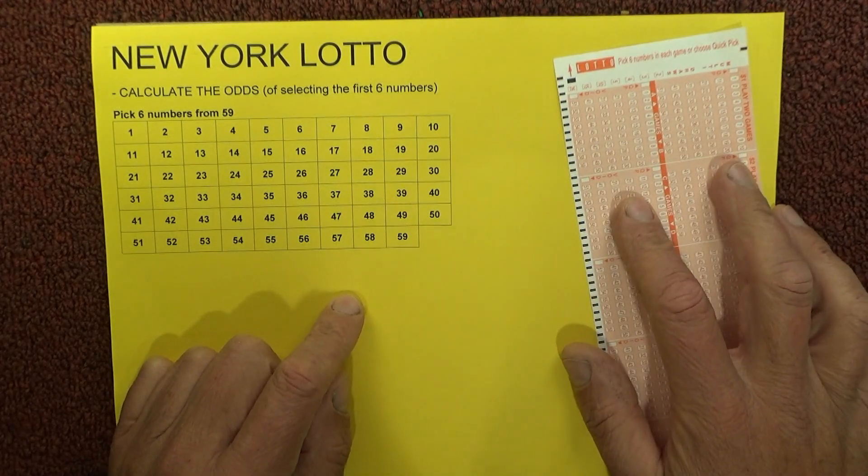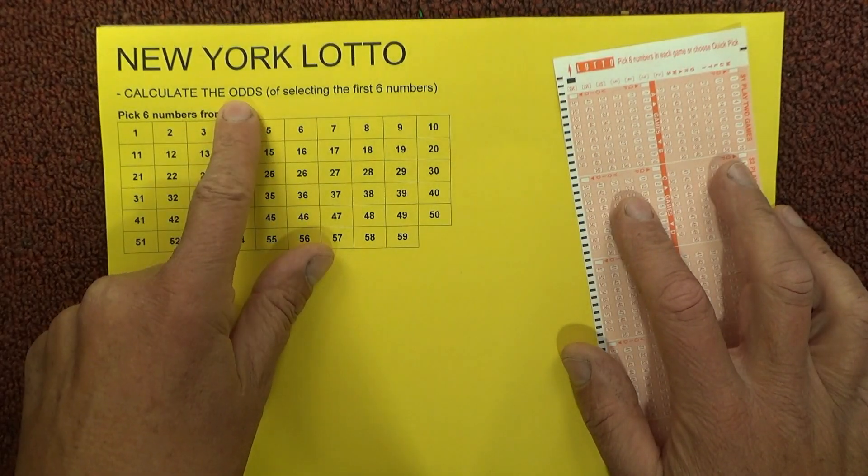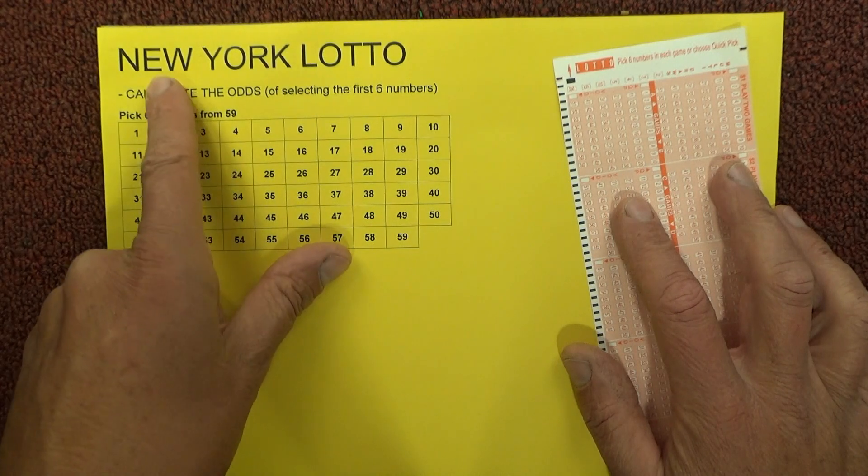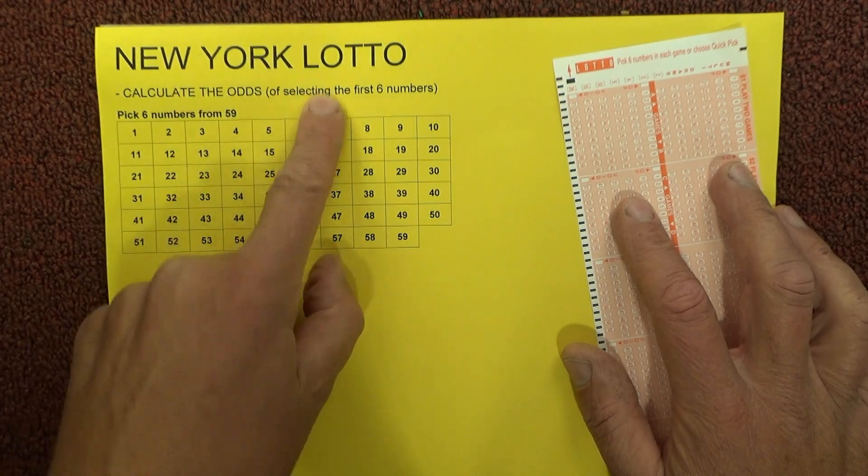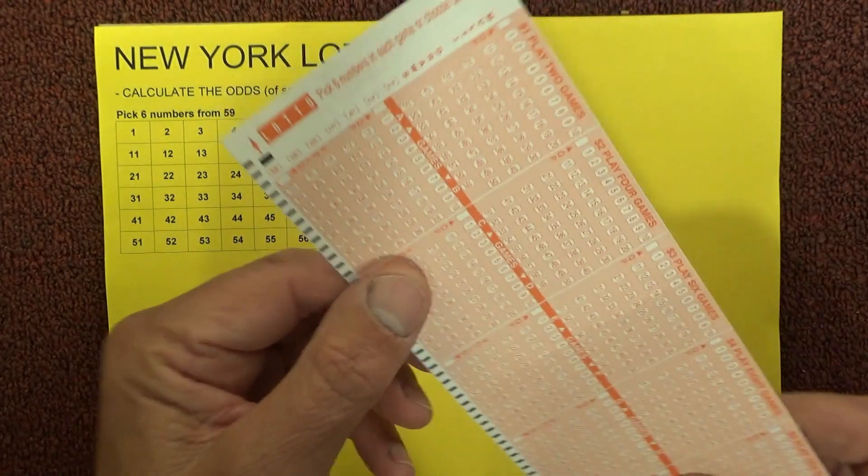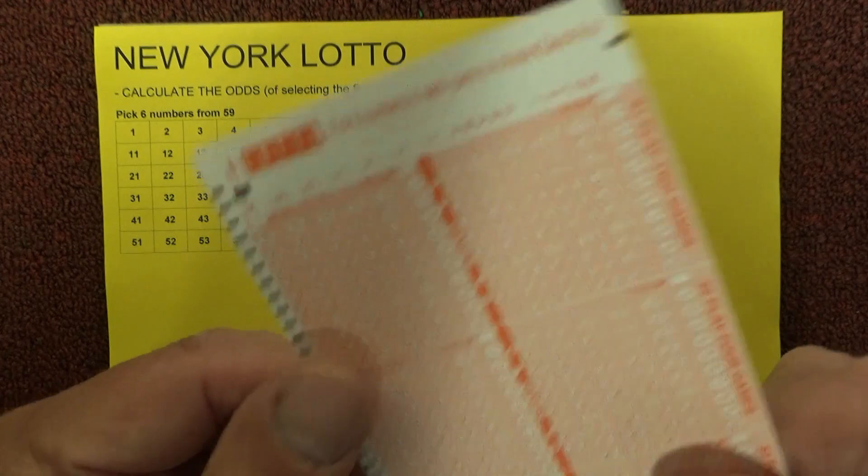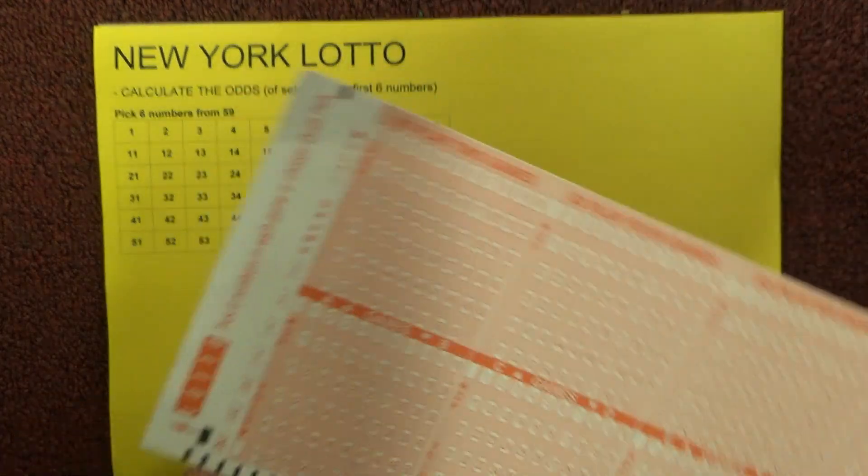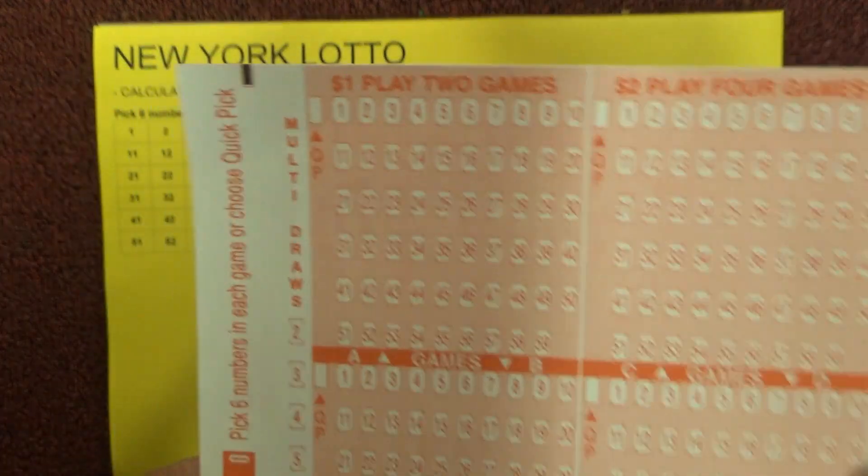Hello, today I'm going to show you how to calculate the odds of winning first prize in New York Lotto by selecting the six winning numbers on one coupon. If you're from New York, then you're probably used to seeing this Lotto coupon.